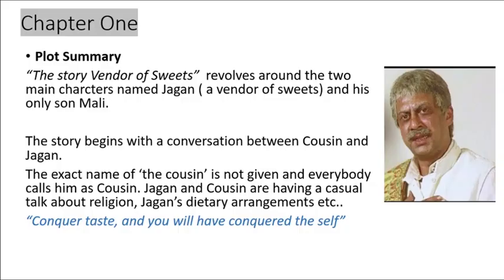Chapter 1 plot summary: The Vendor of Sweets revolves around two main characters — Jagan, the vendor of sweets, meaning a sweet seller, and his only son Mali. The story begins with a conversation between the Cousin and Jagan. The exact name of the Cousin is not given and everybody calls him 'cousin' throughout the novel. Jagan and Cousin are having a casual talk about religion and Jagan's dietary arrangements.